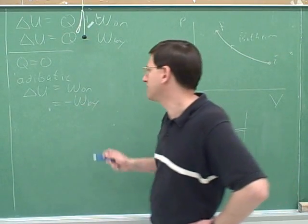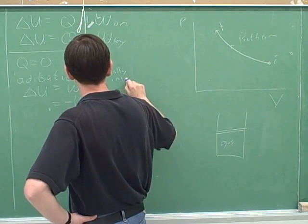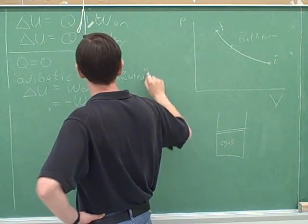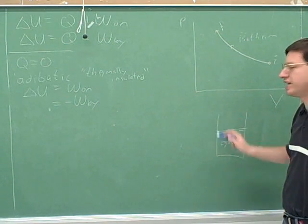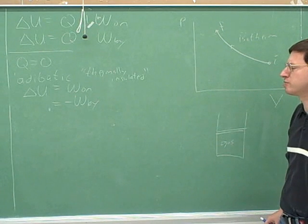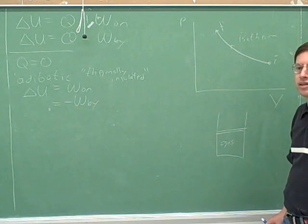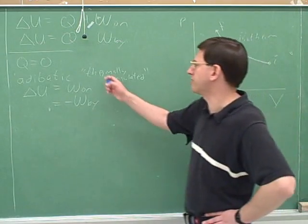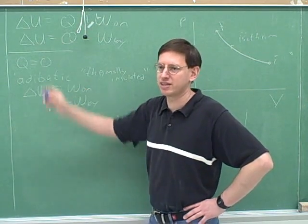Thermally insulated means they put in insulation to prevent heat exchange. So then Q should be zero. The whole purpose of insulation is to prevent heat from getting in or out. Notice that even though we use the word thermal here, this does not mean an isothermal process. It means an adiabatic process.